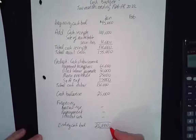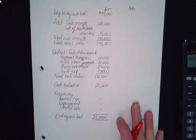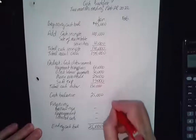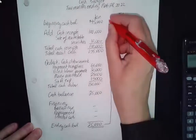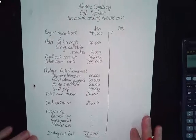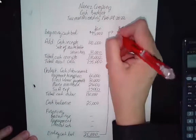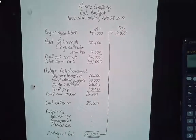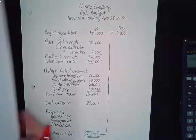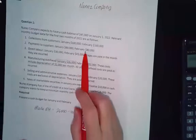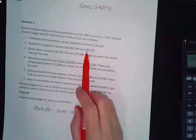This $25,000 closing balance becomes February's opening balance. So we put $25,000 as the beginning cash balance for February. Cash receipts for February: cash collections from customers are $160,000.